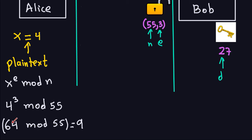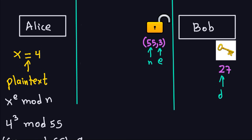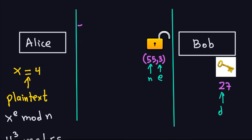Alice computes 4 cubed, which is 64, and then takes modulo 55 — meaning divide 64 by 55 and look at the remainder. The result is 9. Note that in reality everything here would be done in binary; we're using decimal representation just to make it easier to write down. So the number 4 (plaintext) and 9 (ciphertext) would actually be binary numbers.